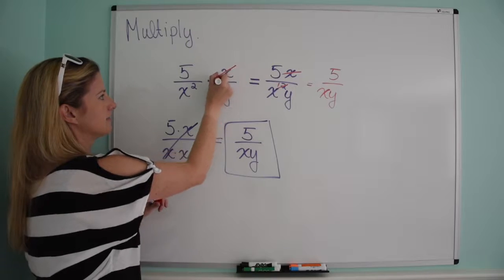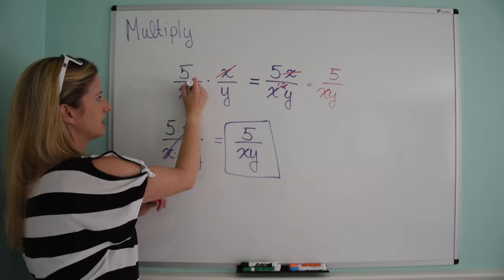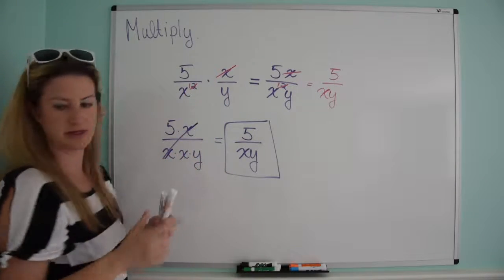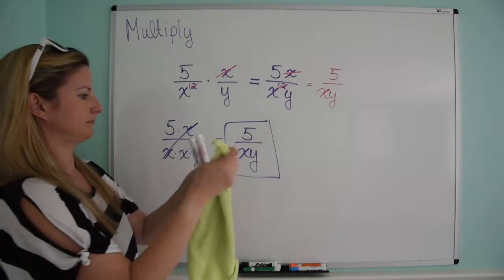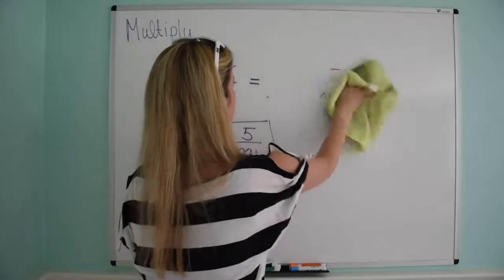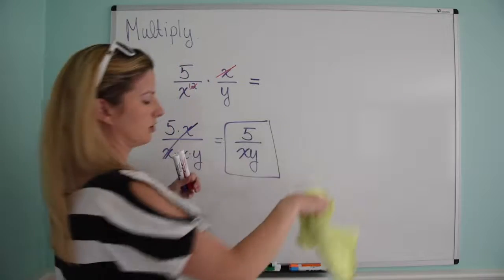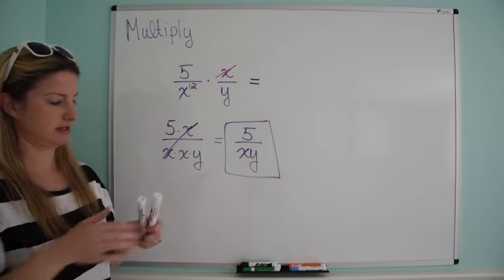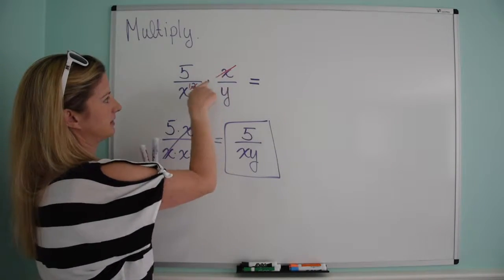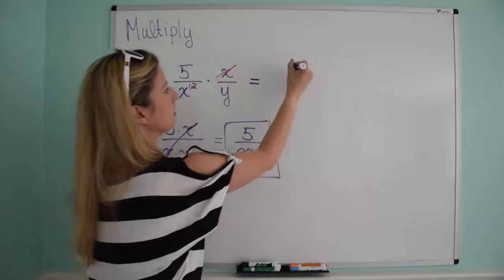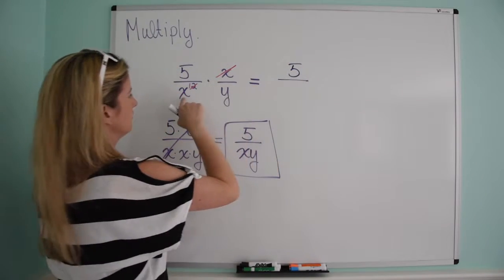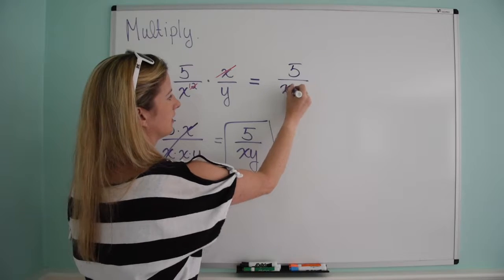So I can divide that out with one of these, make that a 1. And then you're just now going across the top and the bottom, so 5 times this divided out as 1. So that's just going to be 5 and then you've got 1x and 1y.